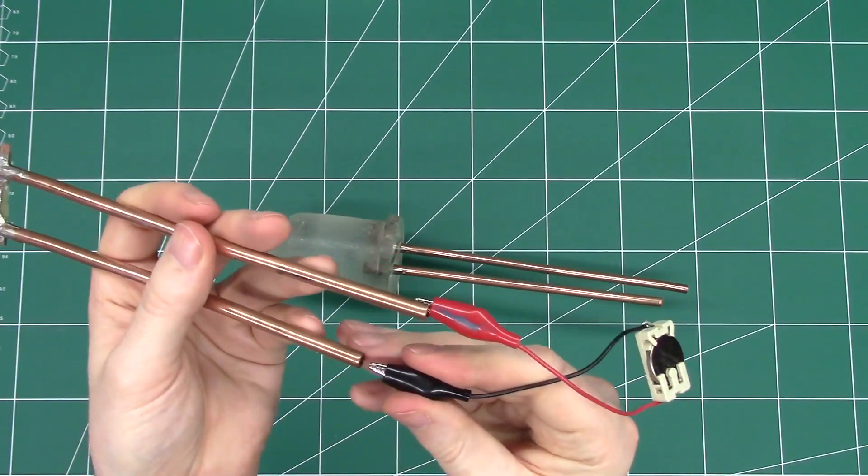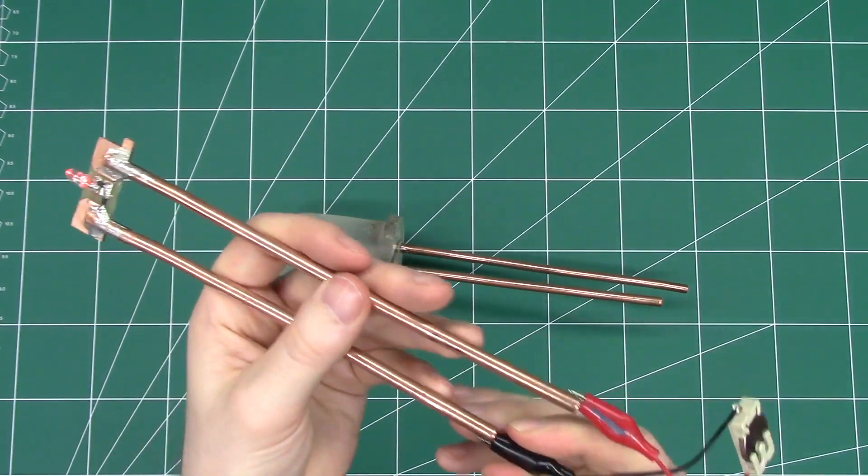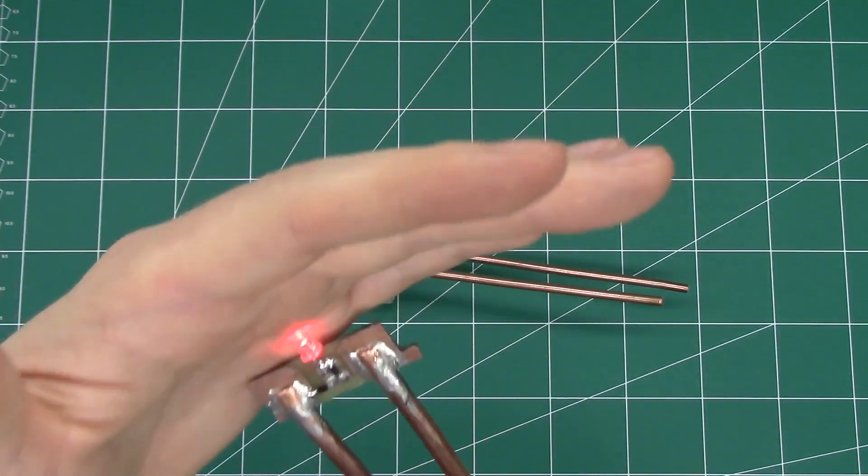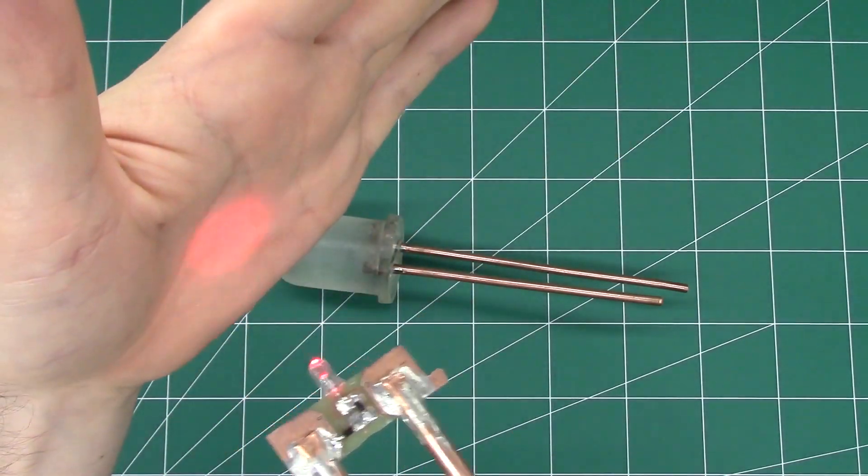So I'm just connecting it up to a small coin cell battery. And there we can see the LED lighting up.